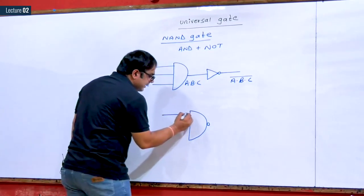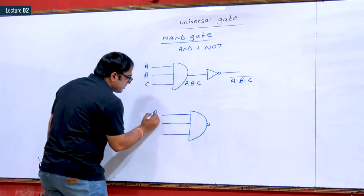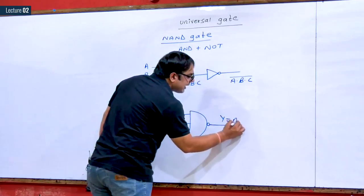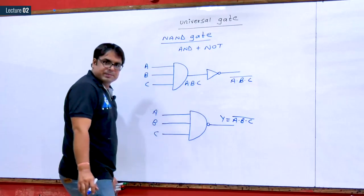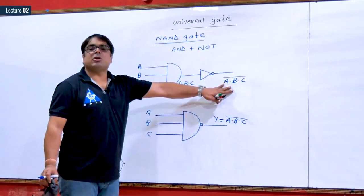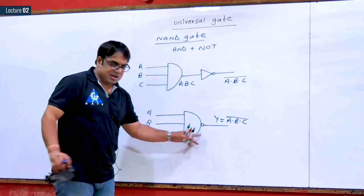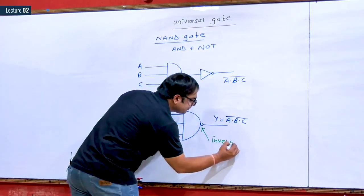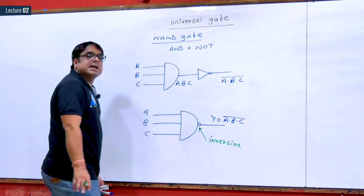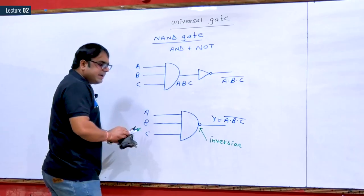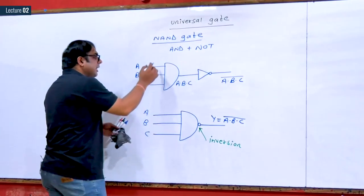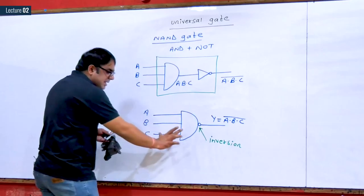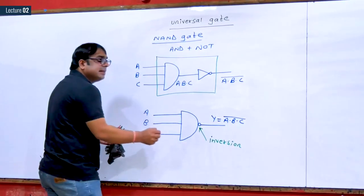Now considering the same inputs A, B and C, I will directly write the output as A·B·C whole complement. The complement logic is done with the help of this bubble. This bubble simply represents inversion. So I have simplified the logic symbol — this is the simplified logic symbol for a NAND gate.